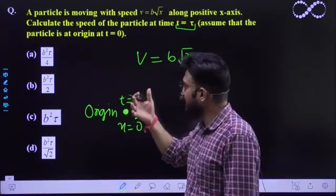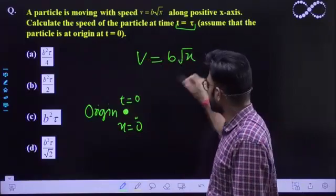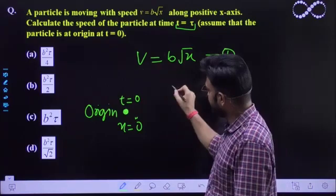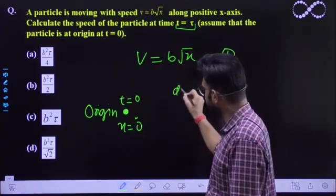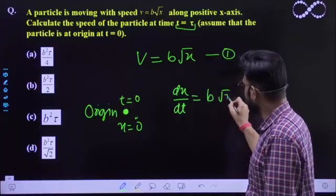Toh jaldi se main expression leya hoga velocity, the displacement in terms of time. Toh again this is the first expression that has been given to you. Find out isko kya karenge hum. We can be easily written as dx by dt which is nothing but b root x.